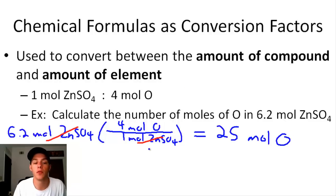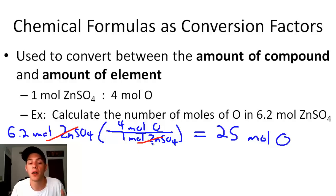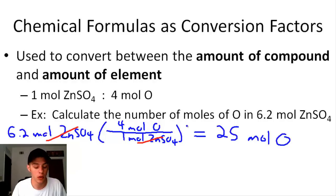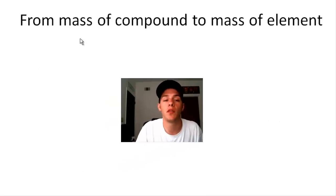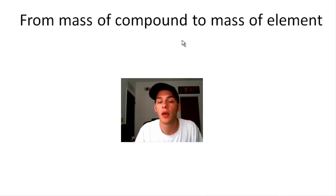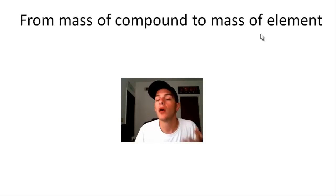We're converting from the amount of a compound to the amount of an element in that compound — not necessarily converting masses. But using molar mass, we can turn those amounts into masses. If we have the mass of a compound and want the mass of an element without calculating mass percent composition, we can: first convert mass of compound to moles of compound using molar mass, then use the molar ratio from the formula to convert to moles of the element.